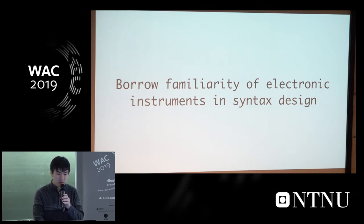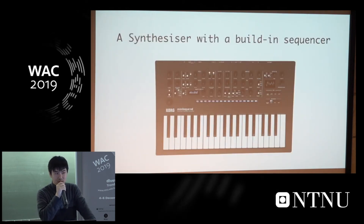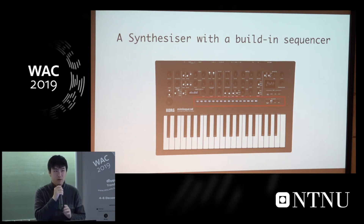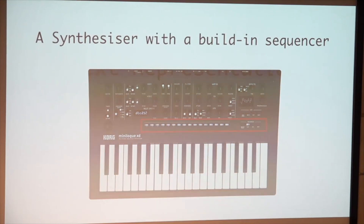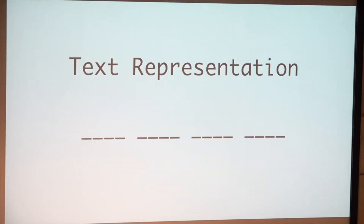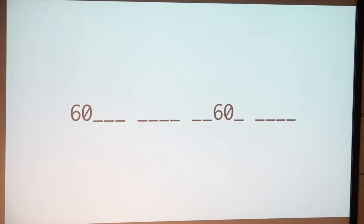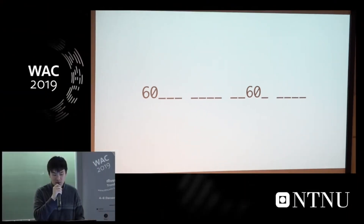I will start from a very intuitive example. This is a very popular synthesizer and you can see it has a built-in sequencer. What if I ask you to use text to represent this sequencer? In our design, we use underscore to represent the sequencer. Underscore means rest, and currently no note will be played. If you want to play some note, you just replace the underscore with the MIDI number.